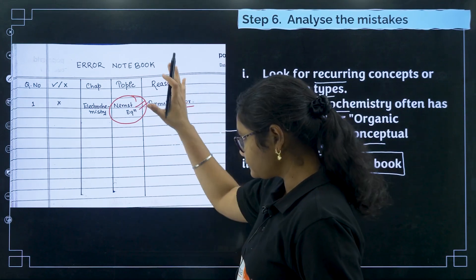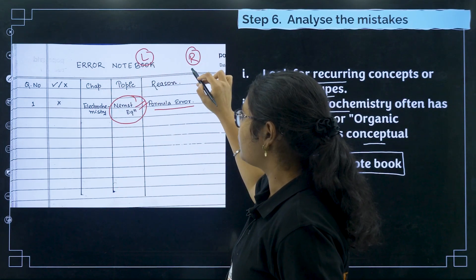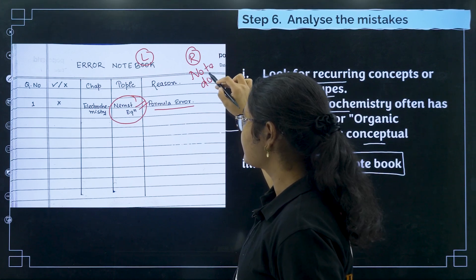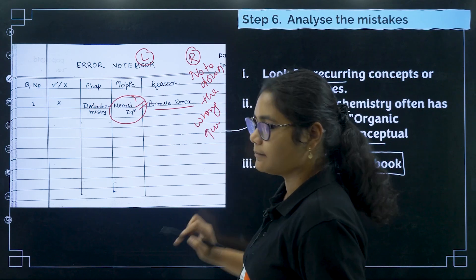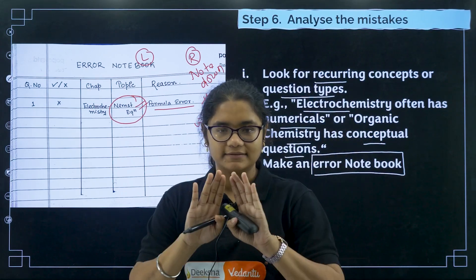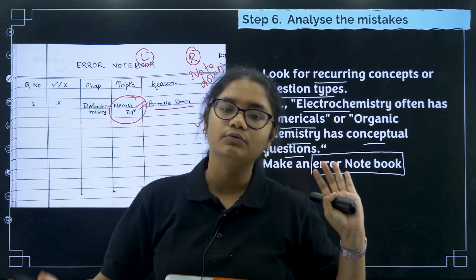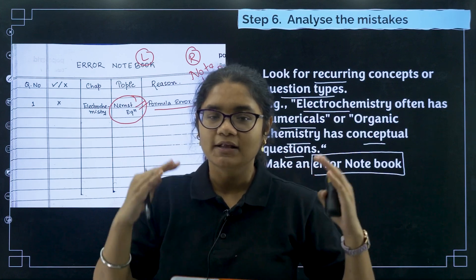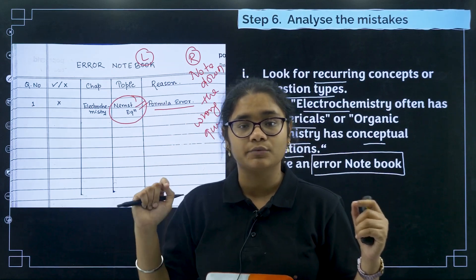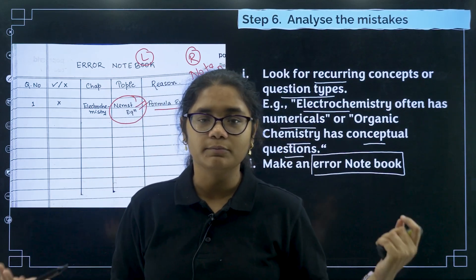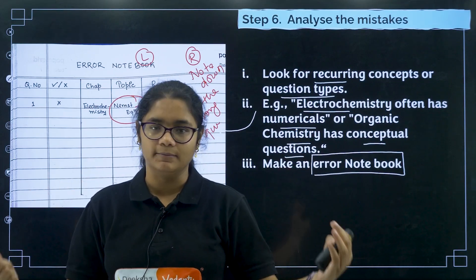If you have time, you can extend this further. On the left side of your notebook, write the analysis of the 30 questions. On the right side, note down the actual wrong questions. This is mandatory. When you do revision, revise these wrong questions. This way, if you want to revise electrochemistry, you know exactly which questions you got wrong and which topics you should practice again. You can focus on weak areas and improve in a structured way.